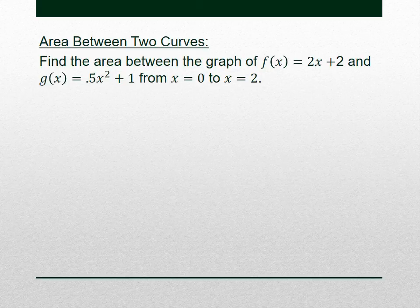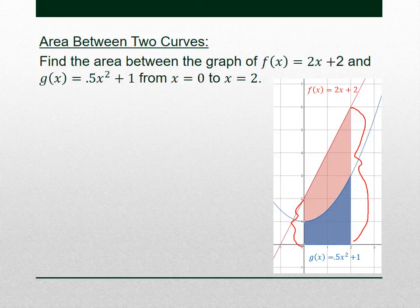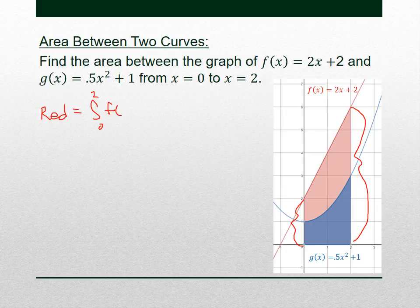Now we're going to talk about the area between two curves. I have the exact same f(x) and g(x), and I want the area between them from 0 to 2. Remember this is the exact same red and blue graph I just had. The red shaded region going from the graph all the way down to the x-axis was the definite integral from 0 to 2 of f(x) dx, and we knew that red area was 8.